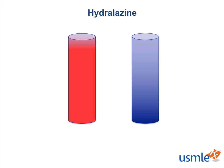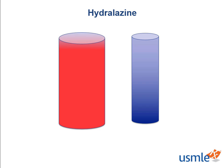Hydralazine is a potent vasodilator that acts primarily in the arteries and arterioles with no effects on systemic veins. It only inhibits vasoconstriction of arteries and arterioles with absolutely zero effect on systemic veins.